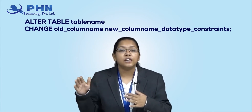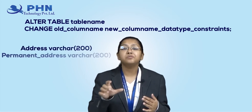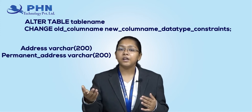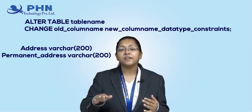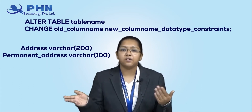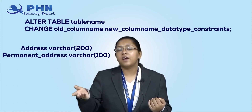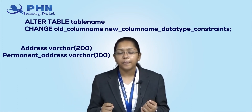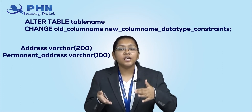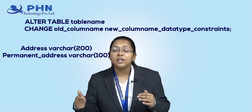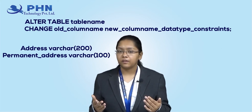And then, later on, the data type and the constraints if any. In my table, the address data type is VARCHAR(200). But if I want the permanent address column to have VARCHAR(100), I can do it. Or if I want to increase the size to VARCHAR(300), I can still do it using this CHANGE keyword. So you are not only renaming your column name but also changing your data type too.